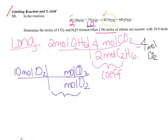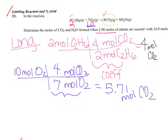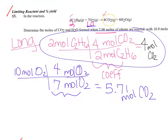We see a seven for oxygen and a four for carbon dioxide. So 10 times four divided by seven comes out to 5.7 moles of CO₂. Looking at these two numbers — four versus 5.7 — who ran out first? Ethane, just like we predicted.